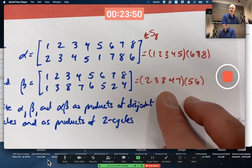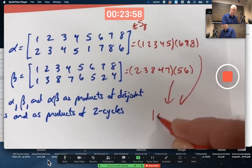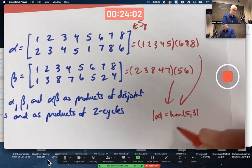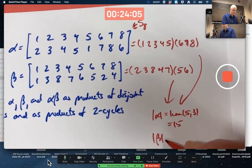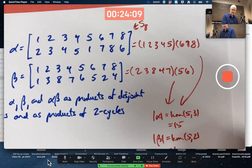We're not talking GCF. We're talking LCM, least common multiple. Not asked for, but the order of alpha would be LCM of 5 and 3, which is 15. And the order of beta would be the LCM of 5 and 2, which is 10.